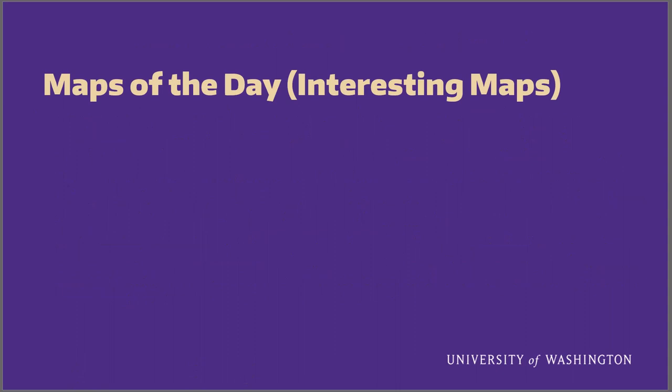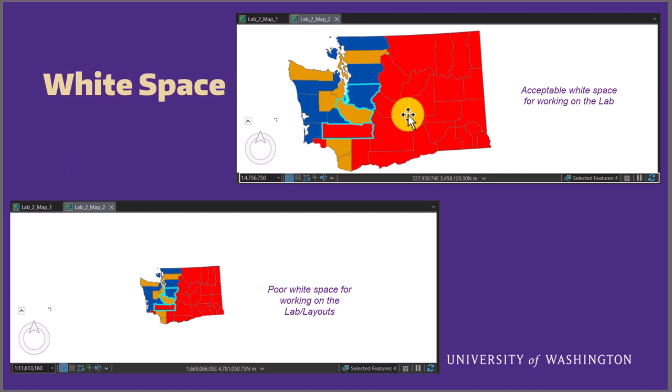In class we'll have some maps of the day with interesting maps and presenters. As a quick reference on white space: this slide has an appropriate amount on the top and bottom, but too much on the left and far too much on the right. In the lower map, the white space around the map is bad on all four sides — north, south, east, and west.